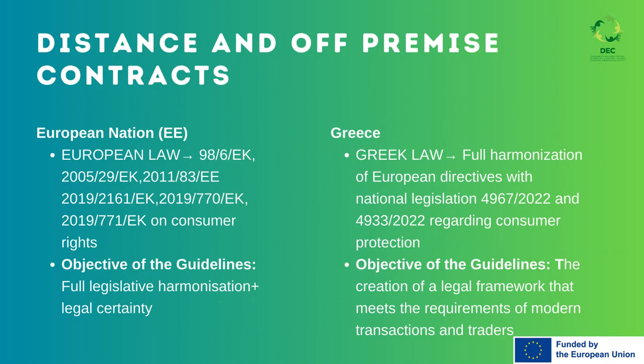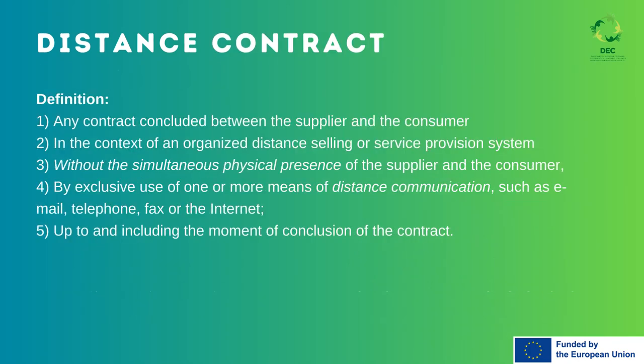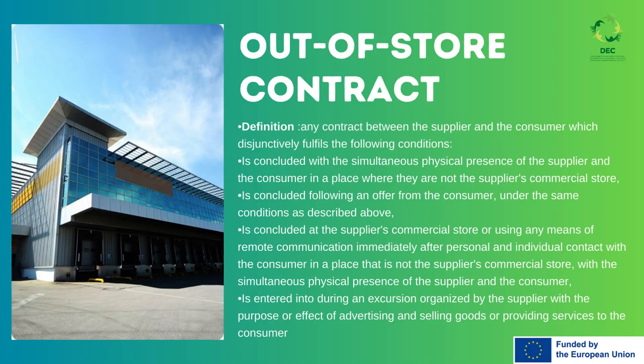There are two distinctive laws on distance and off-premise contracts. The first one is a European law on consumer rights and the second is a Greek law, harmonized with the EU directive regarding consumer protection. The reason for establishing distant contracts is that the contract between the supplier and the consumer is performed at a distance — for example, there is communication through email. An out-of-store contract is another type where both the supplier and the consumer are physically in one place, but this place is not the commercial store of the supplier.